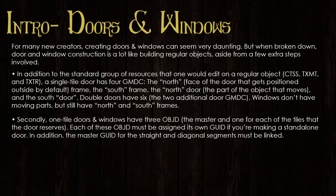Secondly, one tile doors and windows have three OBJD, so you would have to generate multiple GUIDs. There's the master GUID, and then there are the two tiles that it reserves. Each of these OBJD must be assigned a GUID if you're making a stand-alone door. In addition, the master GUID for straight and diagonal segments must be linked.